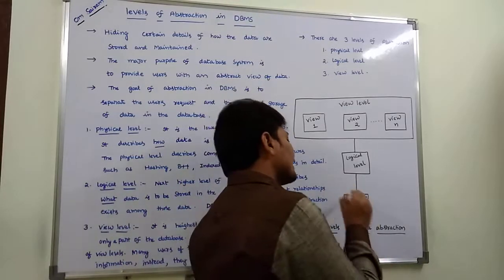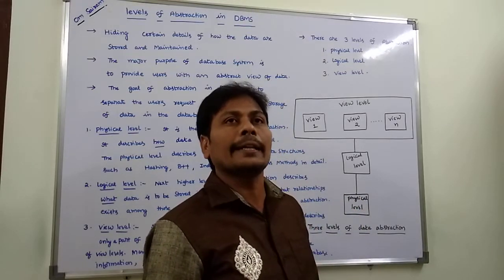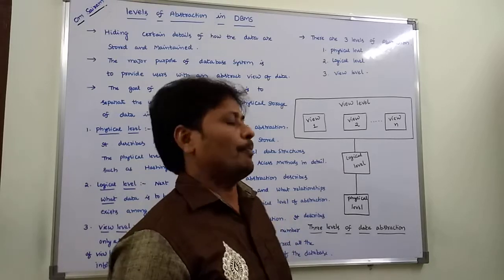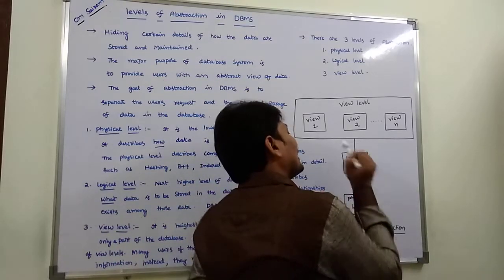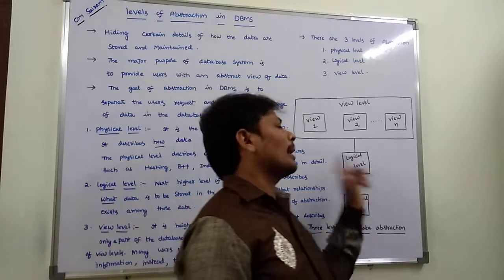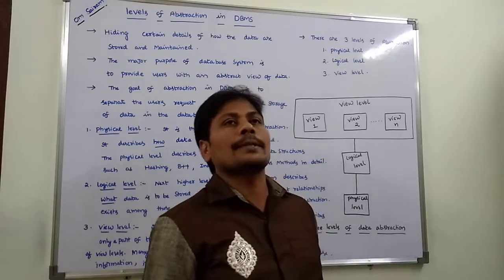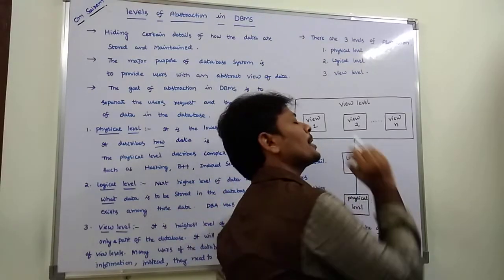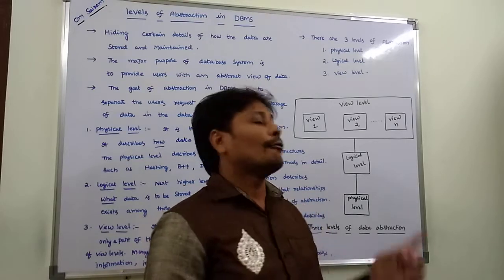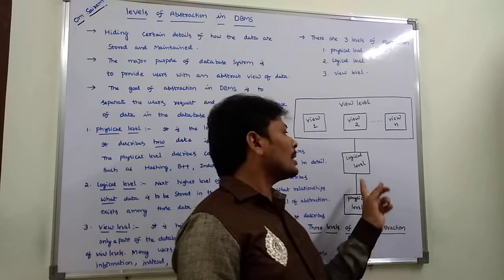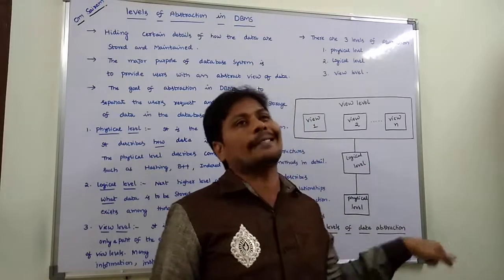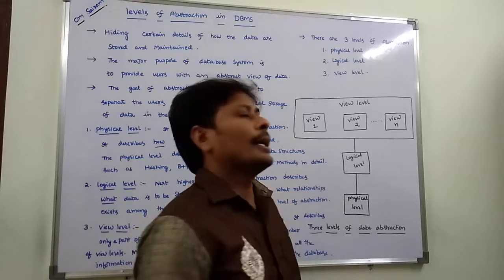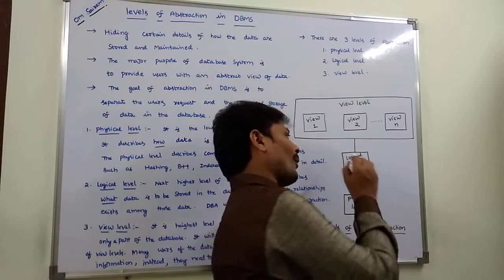At the physical level, the data is stored in the database using files or tables. The next higher level of abstraction is the logical level. This level describes what data is actually stored and what relationships exist among that data. The database administrator uses the logical level.